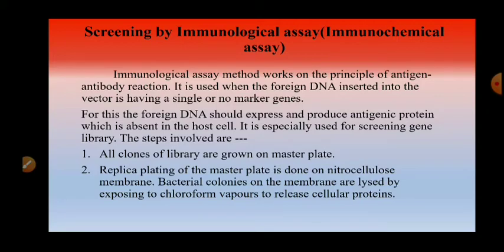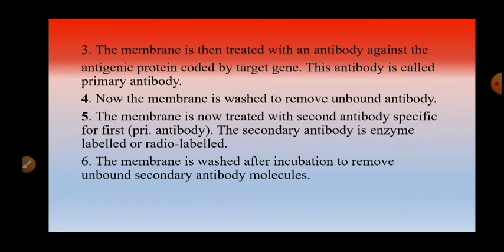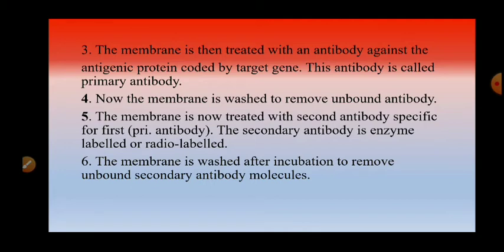The steps are as follows: clones from the library are first grown on a master plate. Replica plating of the master plate is done on a nitrocellulose membrane. The bacterial colonies on the membrane are lysed by exposing them to chloroform vapors so that proteins are released. This membrane is then treated with antibodies — antibodies against the antigenic protein produced by the gene of interest. The foreign gene present inside the vector produces an antigen, and to identify this protein, an antibody is added to the surface of the nitrocellulose filter membrane. This antibody is called the primary antibody.